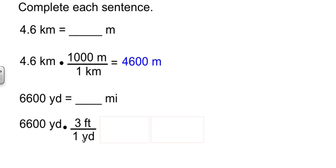Yard cancels yard, feet cancels feet. And all I'm left with is miles. Well, now my calculator can do the heavy lifting. 6,600 times 3 divided by 5,280 gives me 3.75 miles.